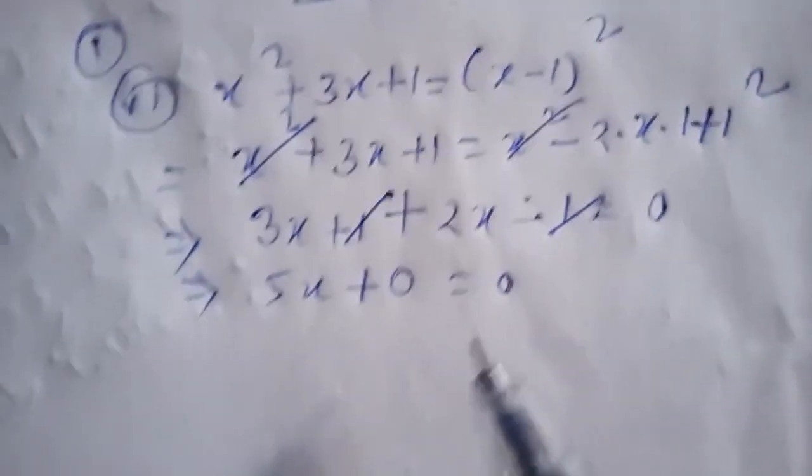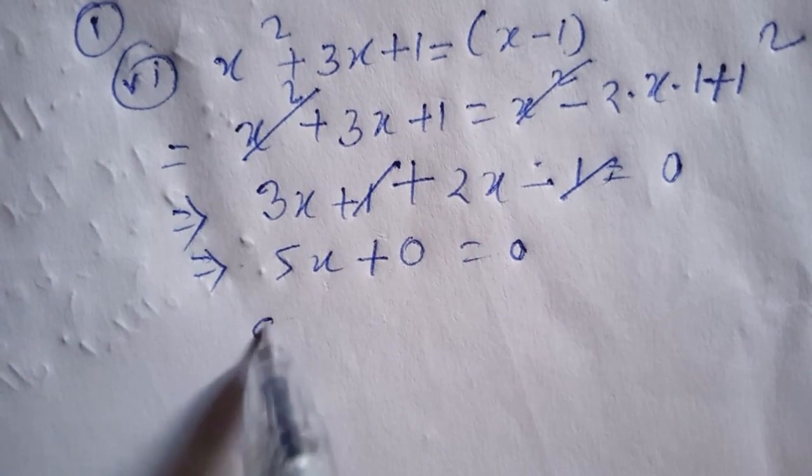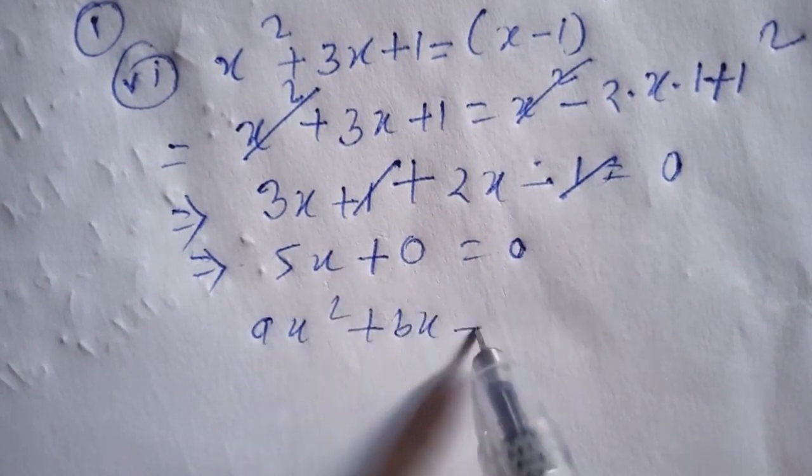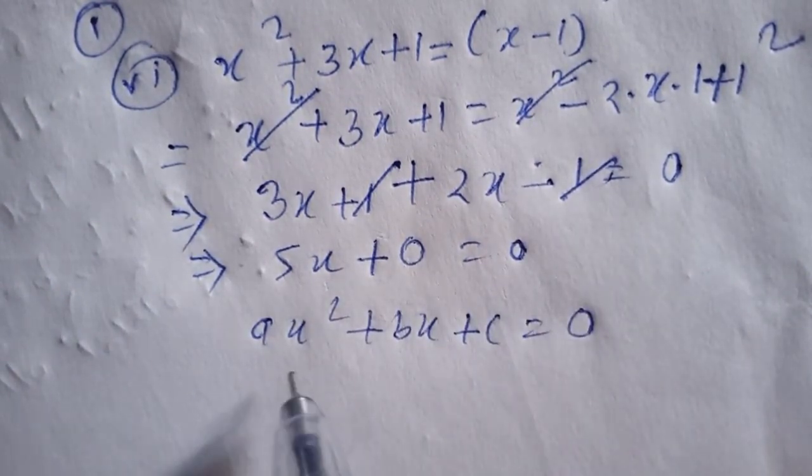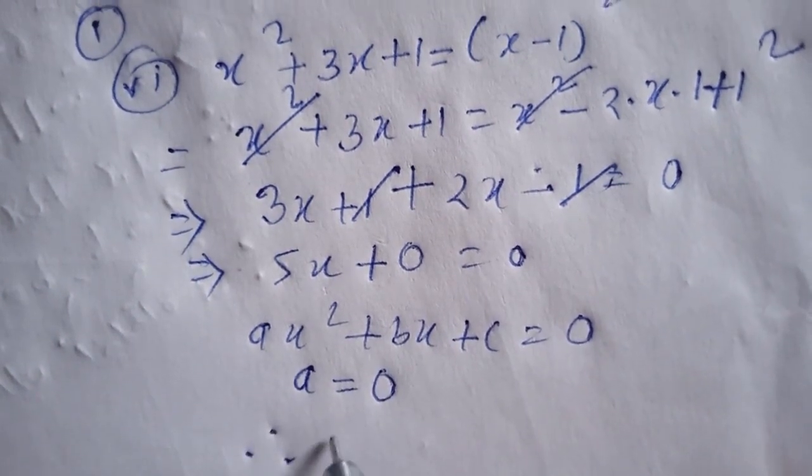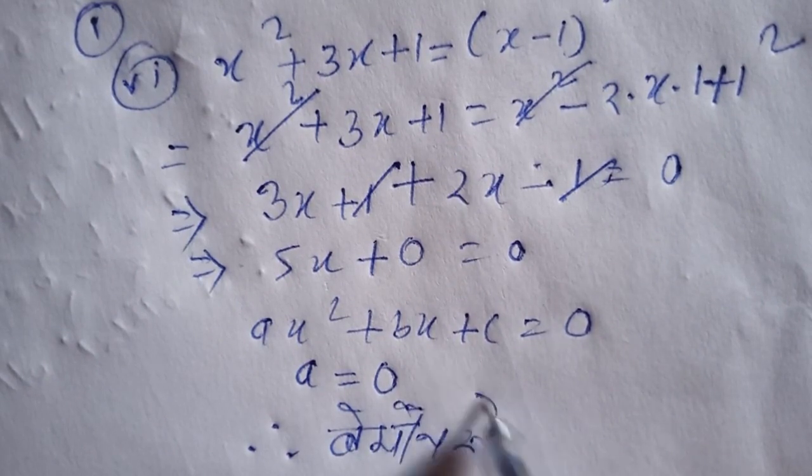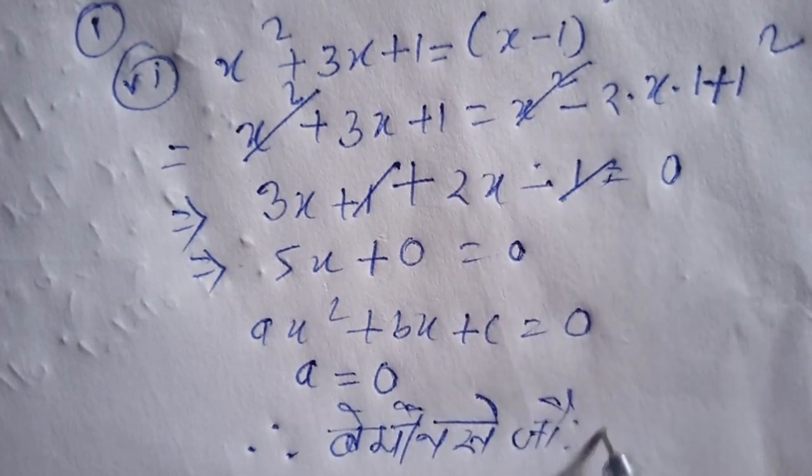Comparing with the general formula ax squared plus bx plus c equals 0, we see a equals 0, b equals 5, and c equals 2.